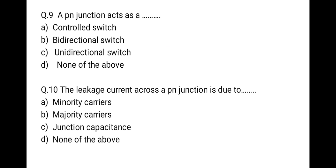The next question: a PN junction acts as what? The correct option is a unidirectional switch, because a PN junction conducts when forward voltage is applied and does not conduct when reverse voltage is applied. So a PN junction is a unidirectional switch. The leakage current across a PN junction is due to minority carriers.